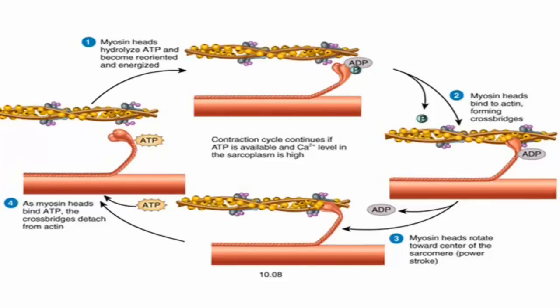So even if the calcium reveals the binding sites on the actin, if there's no energy for the myosin head to be energized and become oriented in a position to grab the actin, nothing can happen. So ATP is necessary.